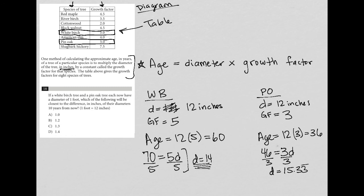So then the question wants to know what will be the closest to the difference in inches? Well, the difference between 15.33 and 14 is just to subtract those two things. And I'd have 1.33 with a bar over it. So the closest difference there when I round, I'd round down and that answer would be C, 1.3.